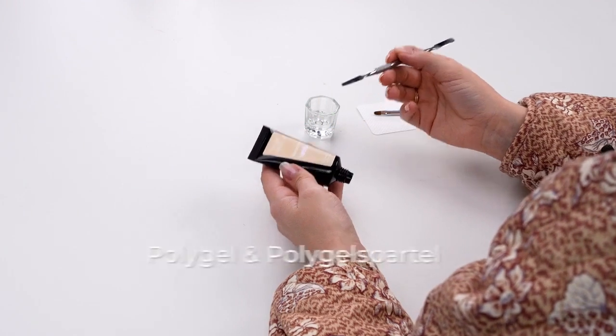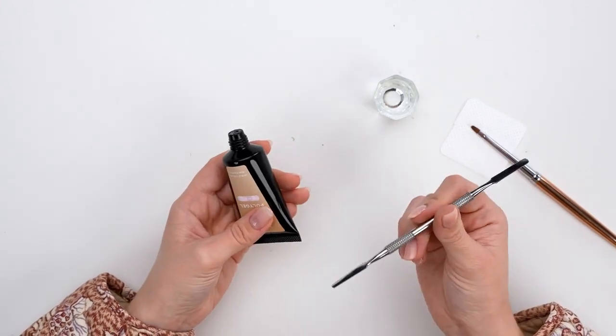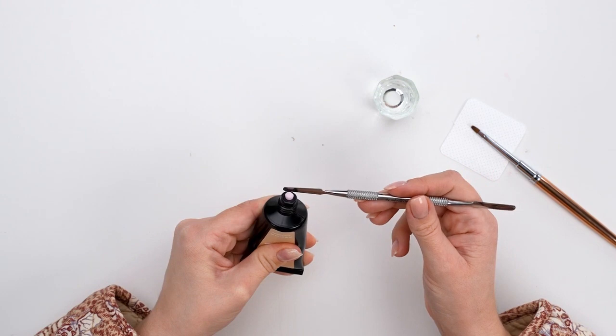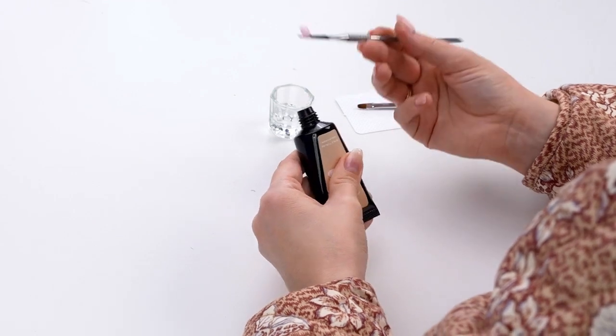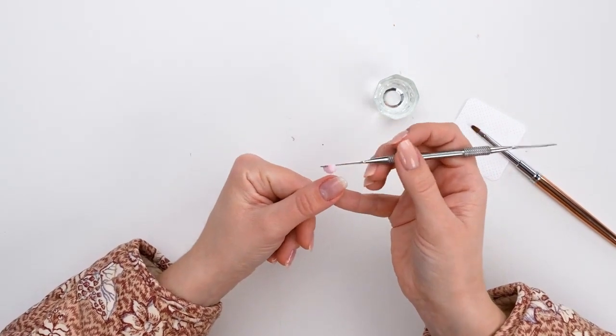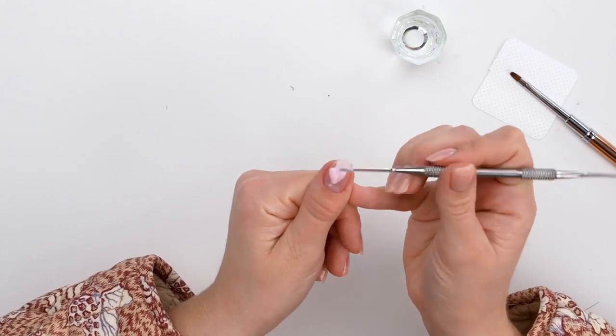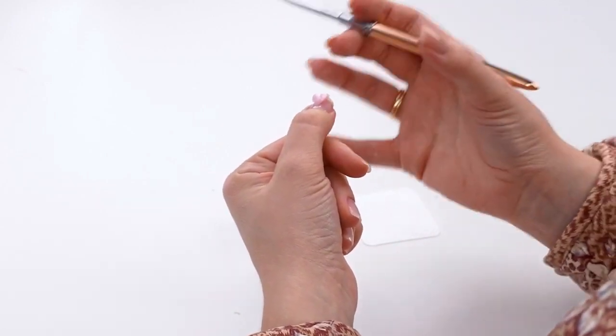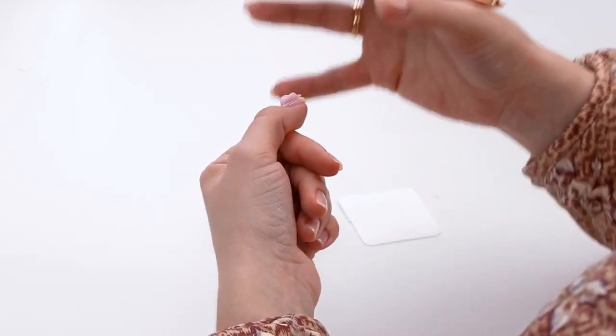When all five nails have cured for 60 seconds, there will be a sticky layer on the surface. It's totally normal and must not be removed. The sticky layer is there so that the next layer, which is poly gel in this case, will adhere even better to the base coat. We are about to strengthen our nails using poly gel in the color milky pink. Grab your poly gel and spatula and squeeze out a little bead onto the spatula.